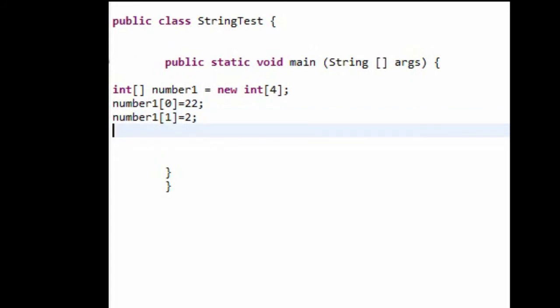And then let's say we want to add these two together. So what we should do is declare another variable, so int a equals number1 element zero plus number1 element one.